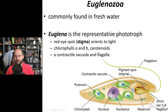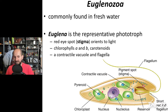Let's talk about Euglenozoa — again, a type of Excavata. Euglena is the representative organism. Euglenozoa are interesting because they are photosynthetic protists. You can see that they have chloroplasts inside. They also have a feeding groove, a flagella, and a pigment spot that directs the organism towards light.